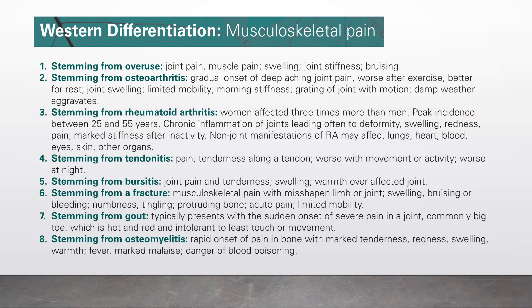Number three, stemming from rheumatoid arthritis: women are affected three times more than men. Peak incidence between 25 and 55 years. Chronic inflammation of joints, leading often to deformity. Swelling, redness, pain, marks, stiffness after inactivity. Non-joint manifestations of RA may affect lungs, heart, blood, eyes, skin, and other organs.